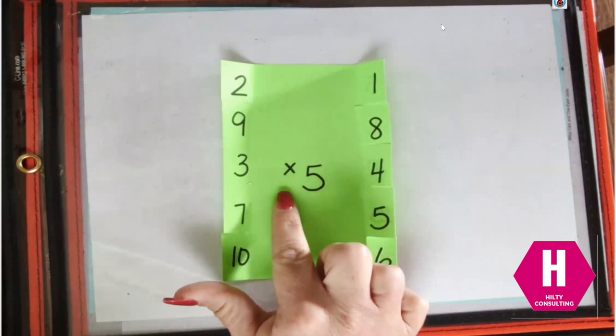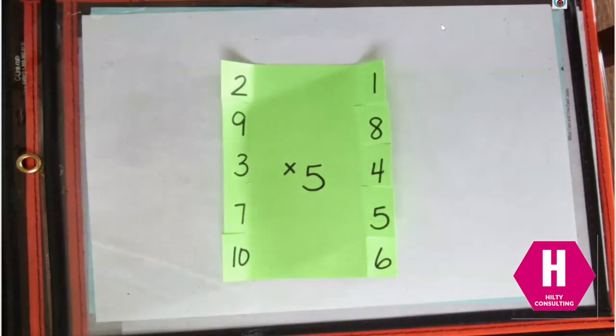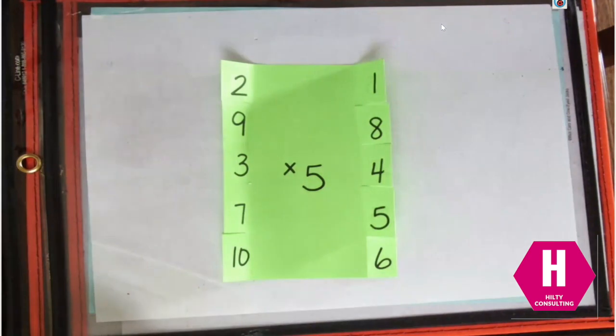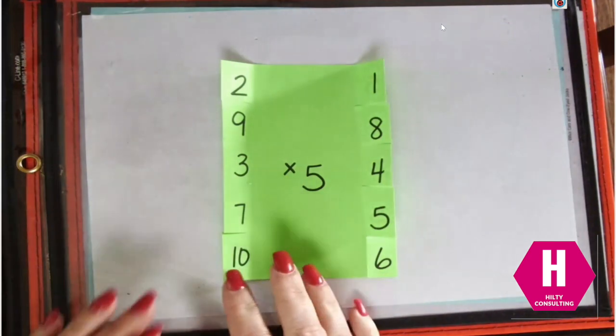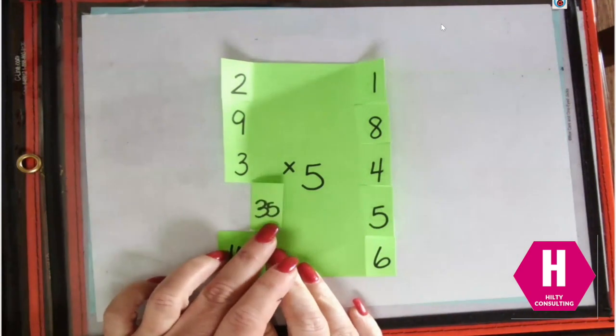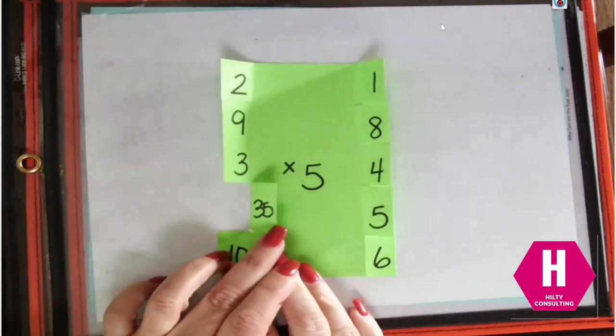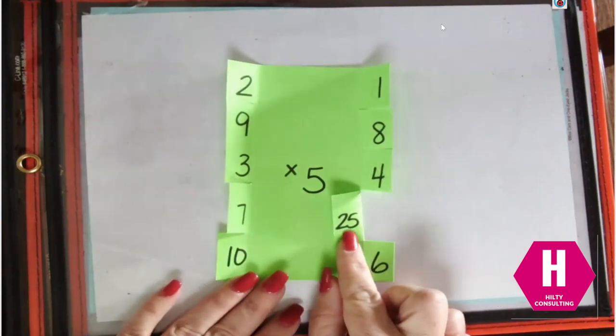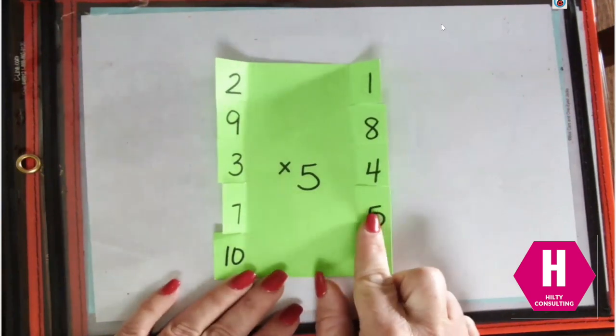What we have the kids do is put times 5 in the center. So if I want to work on my 5 facts, you can see I have in a random order the numbers 1 through 10 around my card. If I want to know 7 times 5, I'm going to fold this flap in and I can see the product is 35. If I want to know 5 groups of 5, I can fold this tab in and I can see that the product is 25.